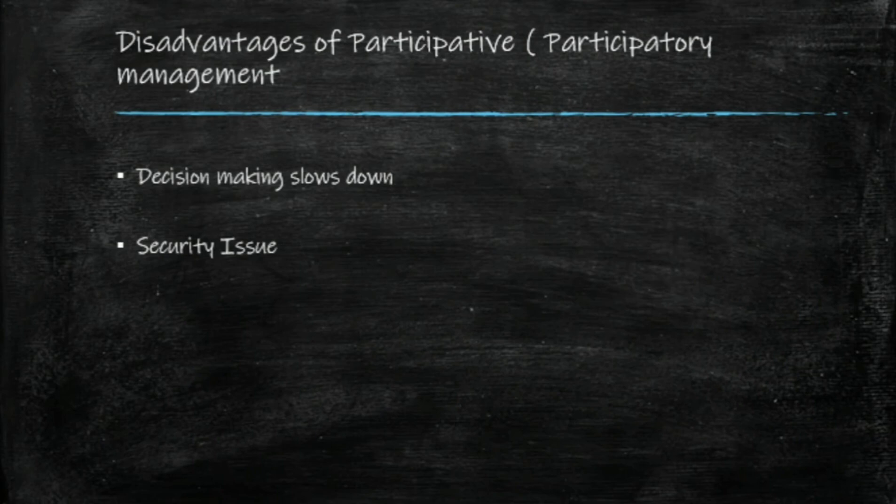Now the disadvantages of participatory management. Decision making slows down. This occurs mainly as we increase the level. If you are in the first level, decision making is not an issue because the decision will already have been taken by management. In level 2, employees can give their commitment.